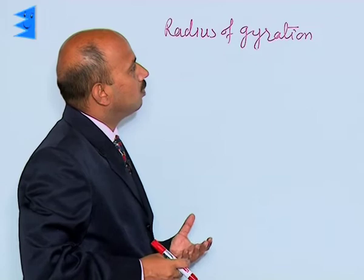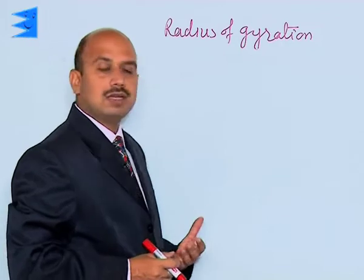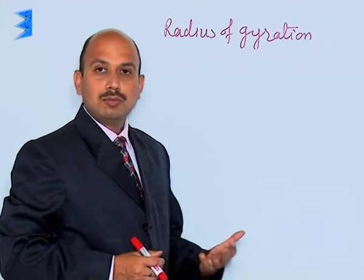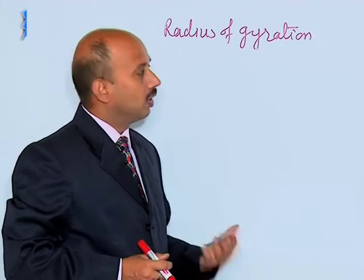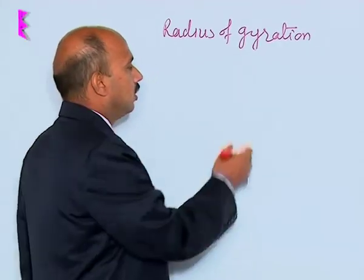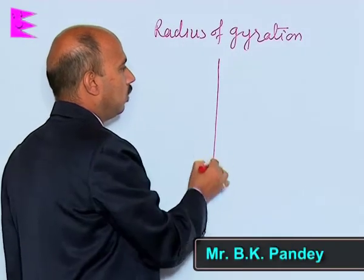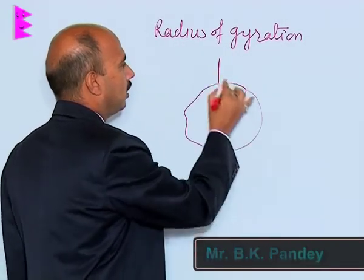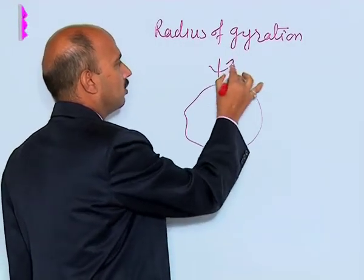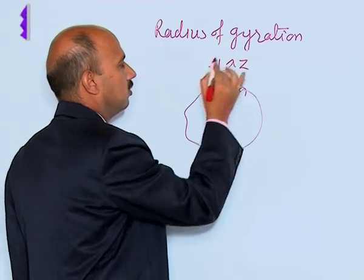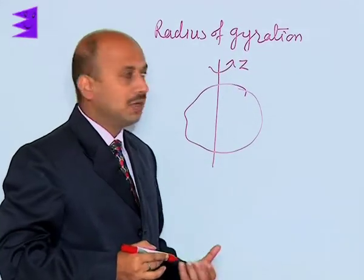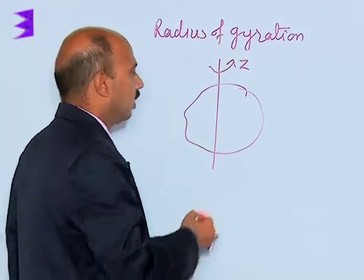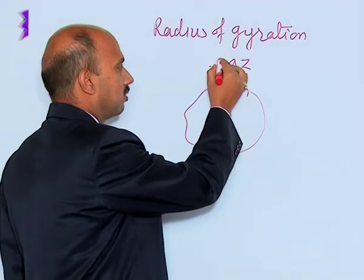Now, see here the new concept is the radius of gyration. What do you mean by radius of gyration? Suppose a rigid body is rotating about an axis — here this is z — the body is lying in the x-y plane and rotating about the z-axis, about a fixed axis.